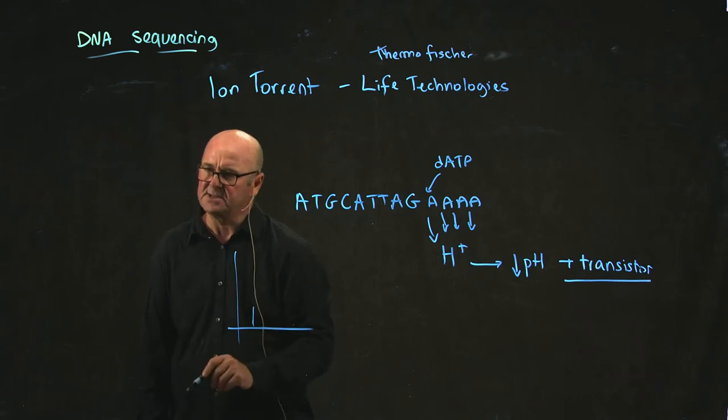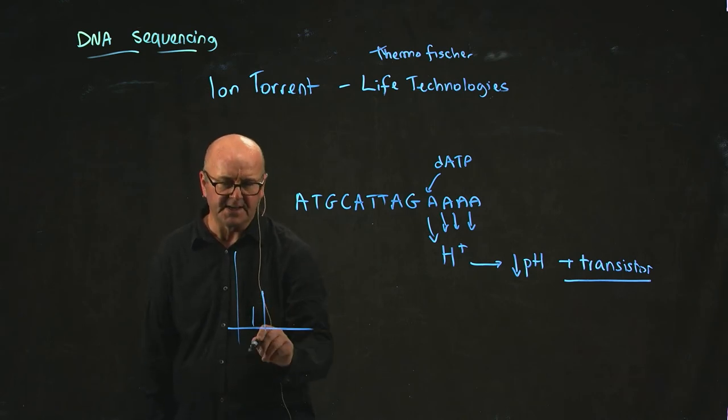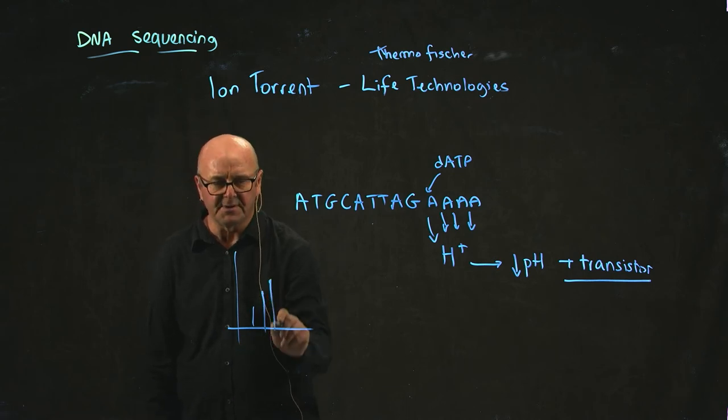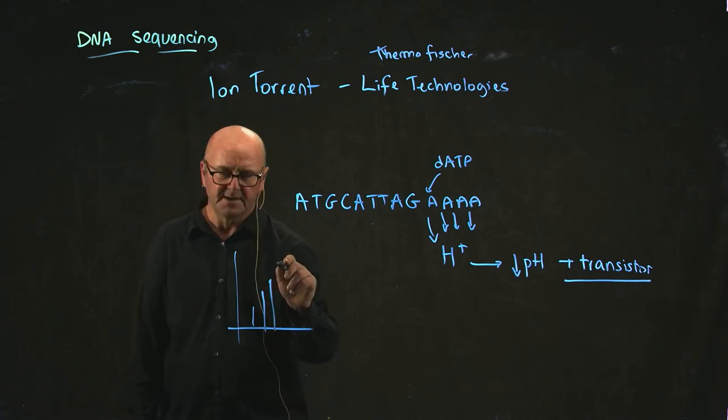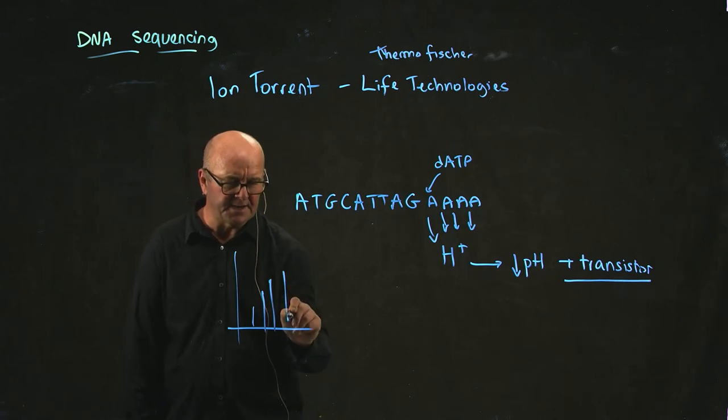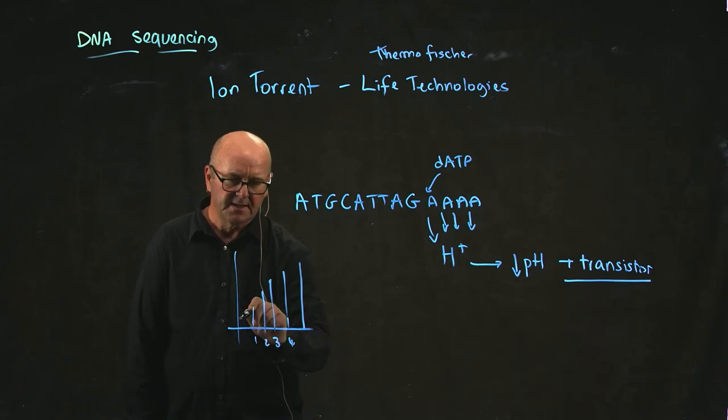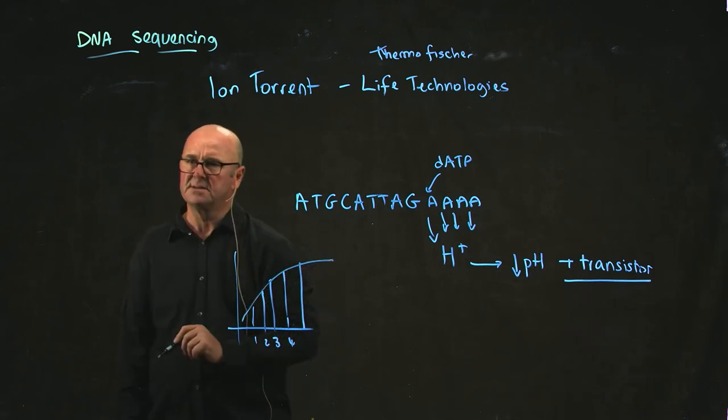And so that gives the detection system a bit of an issue, because when you get one base, you get a peak. When you get two bases, you get a peak, but it's not quite twice as much. When you get three bases, you get a peak, but it's not three times what it was for one, and so on. And so as you add consecutive bases, your signal starts degrading.